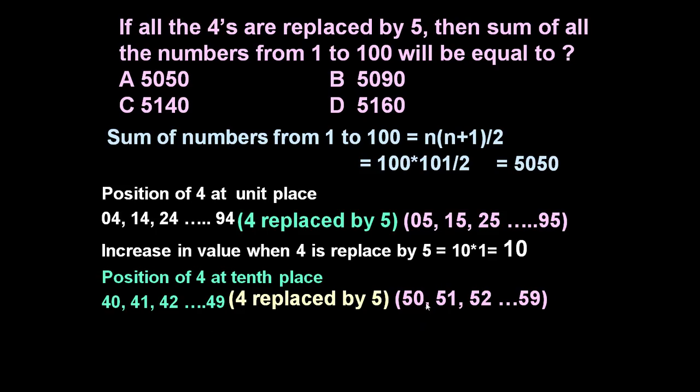40 to 50, 41 to 51, 42 to 52, 49 to 59. So each number is increased by value 10 if 4 is replaced by 5, and 10 such numbers are there. So increase in value if 4 is replaced by 5 will be equal to 10 into 10 is equal to 100.